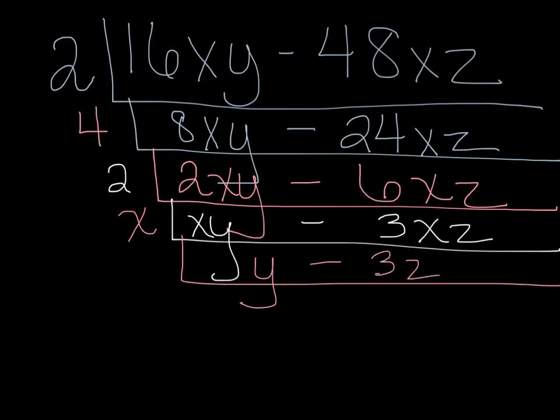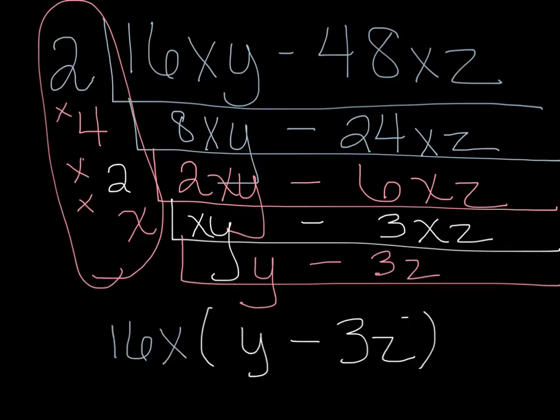Okay, so now what do I do with all this information? What is the factored version of my expression? Just like we always do when we do our cake method to find the GCF, we multiply everything on the side. We should continue multiplying everything on the side. So we would end up with 2 times 4 times 2 times x, which gives us 16x.